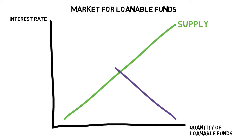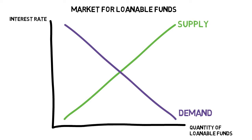On the demand side it's a negative relationship — as the interest rate goes up, the demand for loanable funds decreases, because you can't invest in some profitable projects at that cost. So the demand curve is negatively sloped in terms of loanable funds.